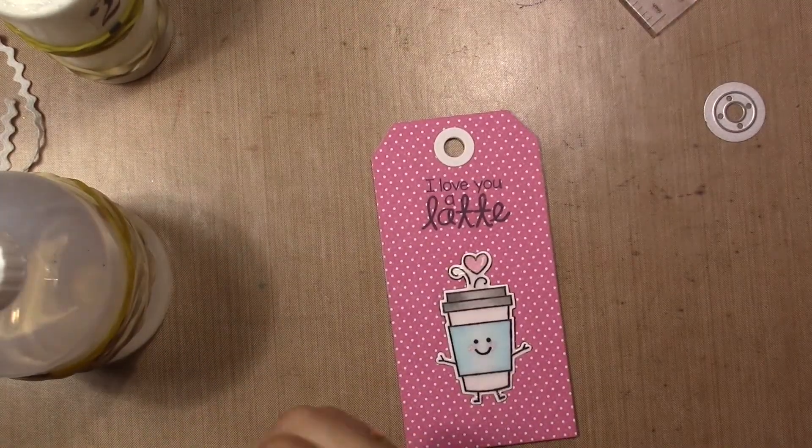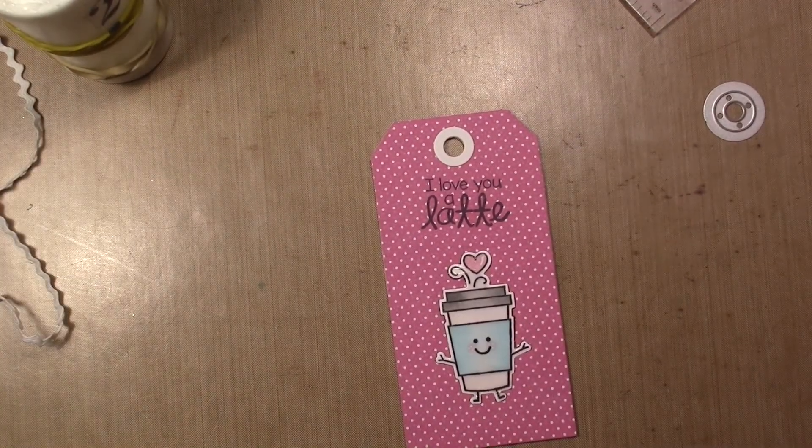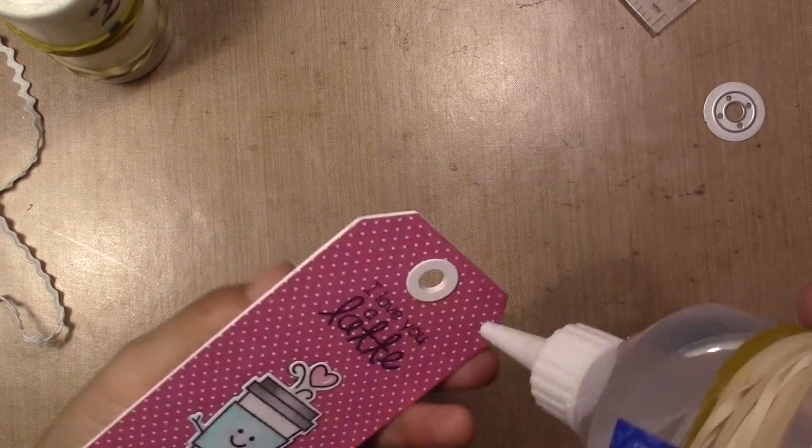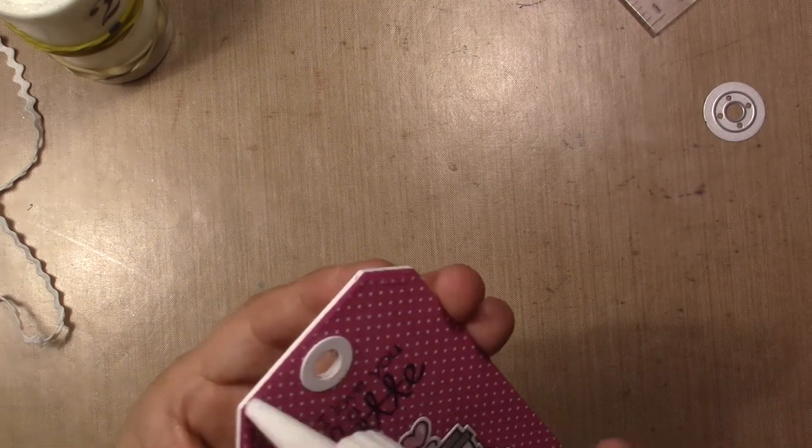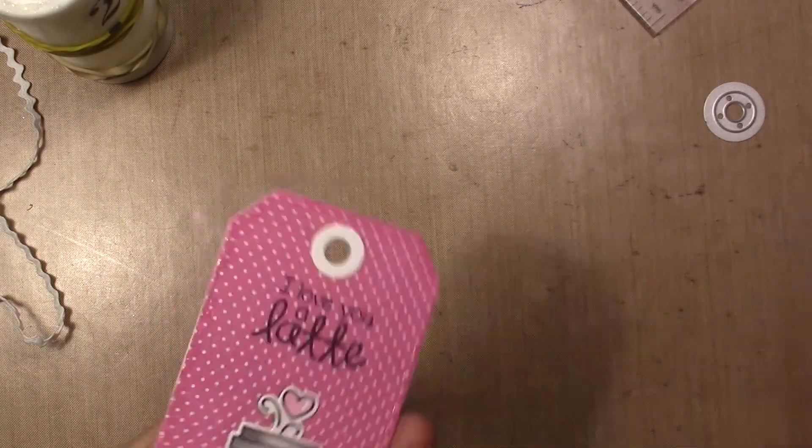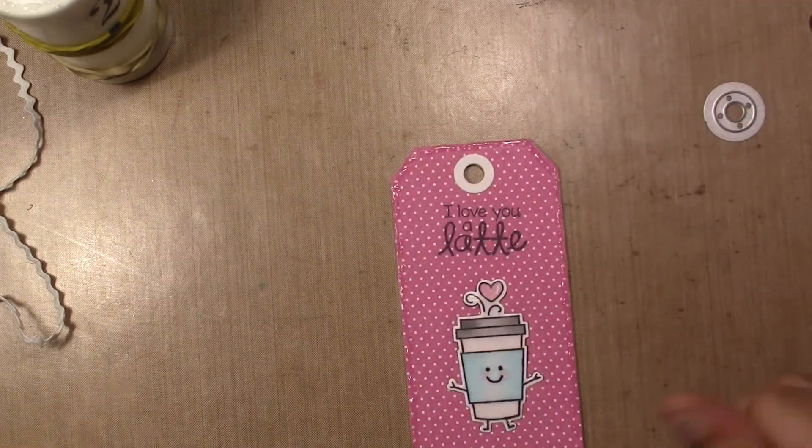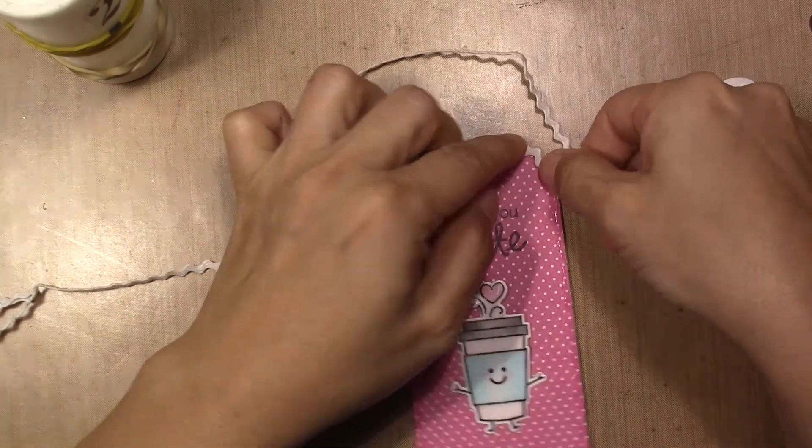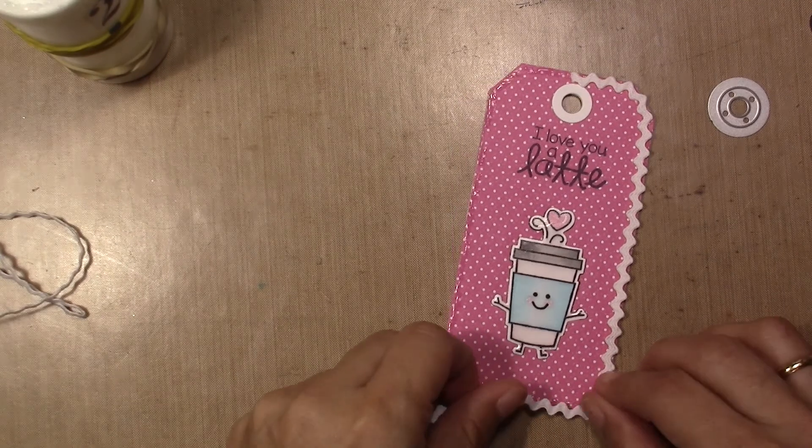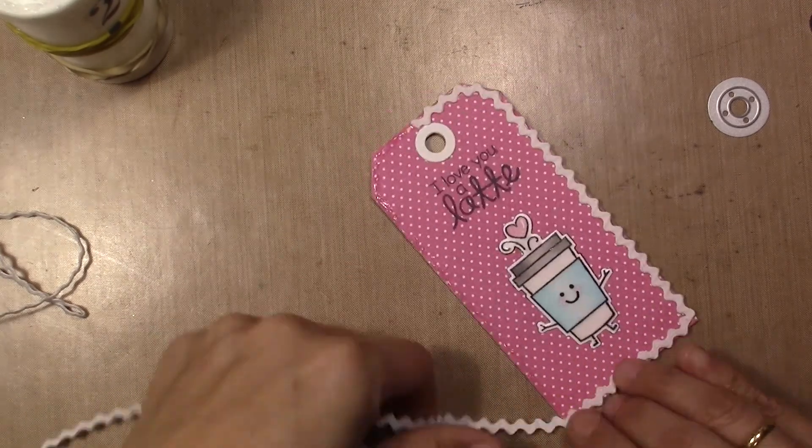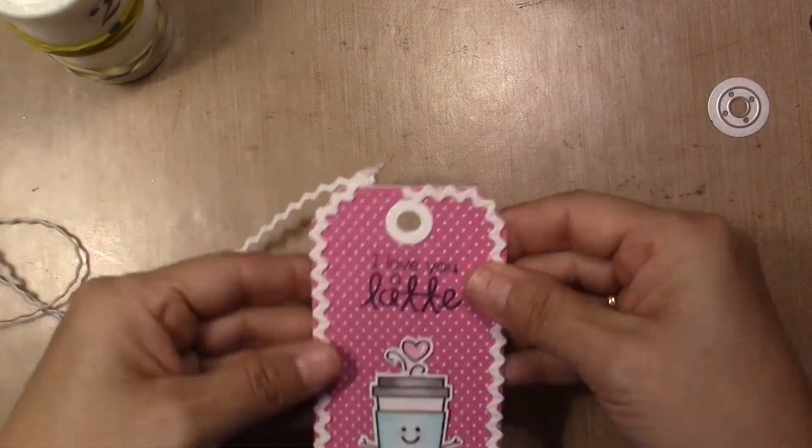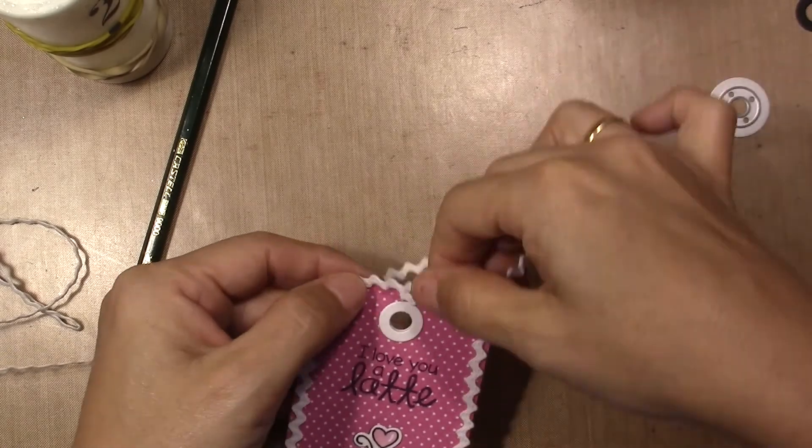I also cut this little ring in the tag and I cut it in white. And I'm going to add zigzag trim around the tag with silicone glue.